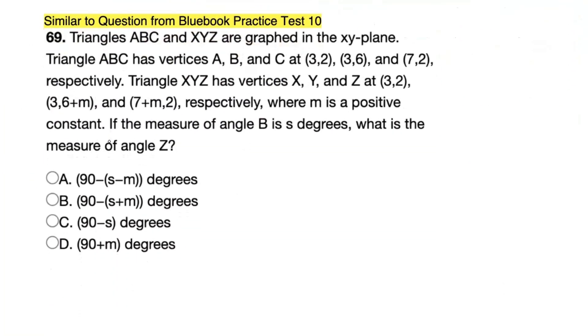Let's move on to the next question. This one is similar to a Blue Book practice question from practice test 10. This one's pretty interesting. It says triangles ABC and XYZ are graphed in the xy-plane. Triangle ABC has vertices A, B, and C at (3,2), (3,6), and (7,2) respectively. Triangle XYZ has vertices X, Y, and Z at (3,2), (3,6+m), and (7+m,2) respectively, where m is a positive constant. If the measure of angle B is s degrees, what is the measure of angle Z?